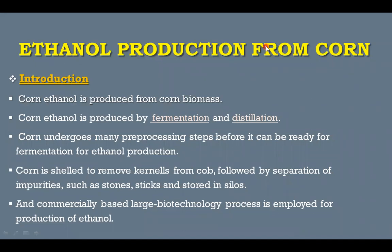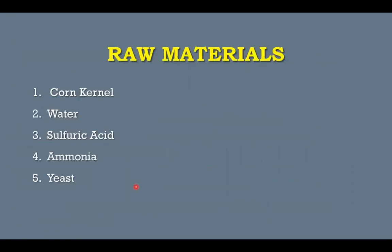The corn ethanol is produced from the corn biomass, and it is produced by fermentation and distillation processes. The corn undergoes many processing steps before it can be taken for fermentation or ethanol production. The corn is shelled to remove the kernels from the cob, followed by the separation of impurities such as stones and sticks. Generally, this method is based on the biotechnology process and it is very useful for the formation of ethanol from corn.